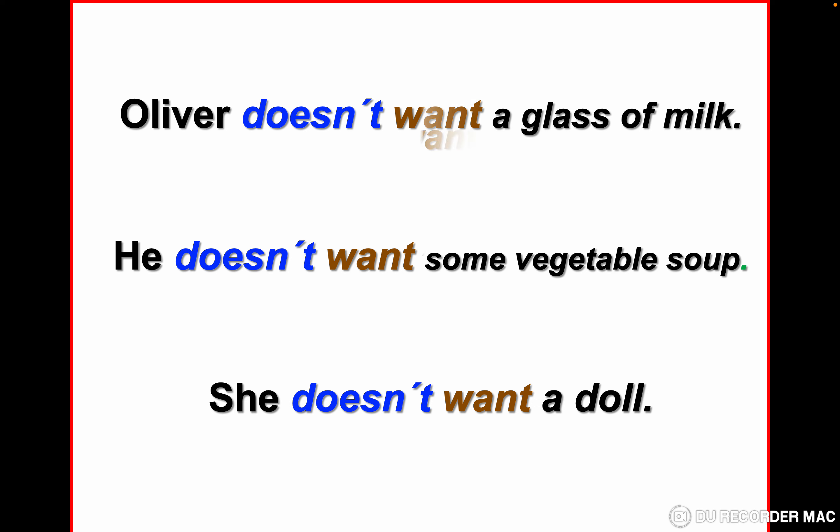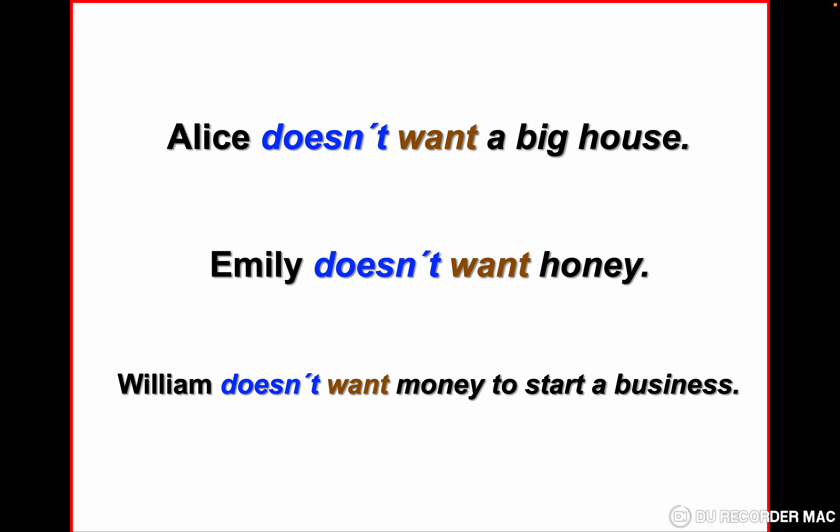More examples: Alice doesn't want a big house. Emily doesn't want honey. William doesn't want money to start a business. Repeat after me: Alice doesn't want a big house. Emily doesn't want honey. William doesn't want money to start a business.